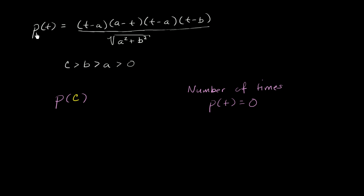Let's say that the position of a particle as a function of time is given by this expression. The position could be positive or negative, and the expression is t minus a, times a minus t, times t minus a, times t minus b, all over the square root of a squared plus b squared. We're also told that c is greater than b, is greater than a, is greater than 0.